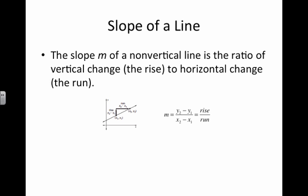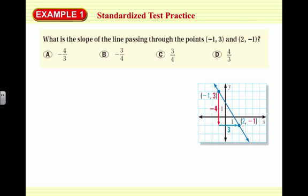Remember that the slope, m, of a non-vertical line is the ratio of the vertical change to the horizontal change, or the rise over the run. So it's rise over run, change in y over change in x, or y2 minus y1 over x2 minus x1.